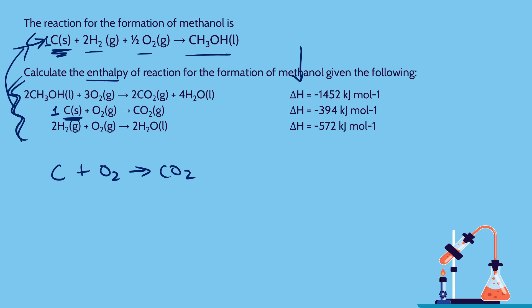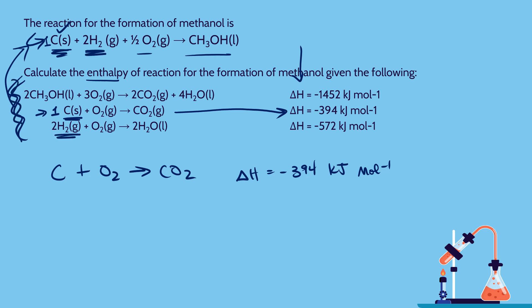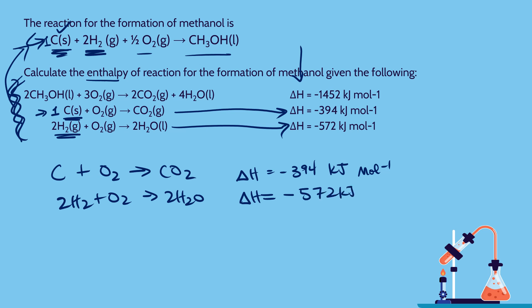I'm dropping the state symbols, and that's okay because there are no differing states here. If we had, say, methanol liquid in one place and methanol gas in another, you'd want to keep the state symbols — but in this set of equations it doesn't matter. So: carbon plus oxygen making carbon dioxide, delta H stays at negative 394 kilojoules per mole since I didn't change that reaction. Now I need two hydrogens — scanning those reactions, how convenient, two hydrogens are already sitting in the reactants. So I don't have to do anything to that equation either. Delta H stays the same: negative 572 kilojoules per mole.